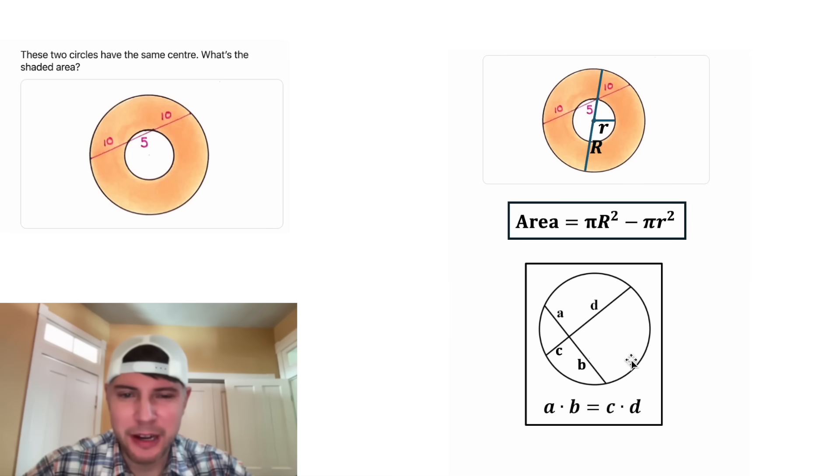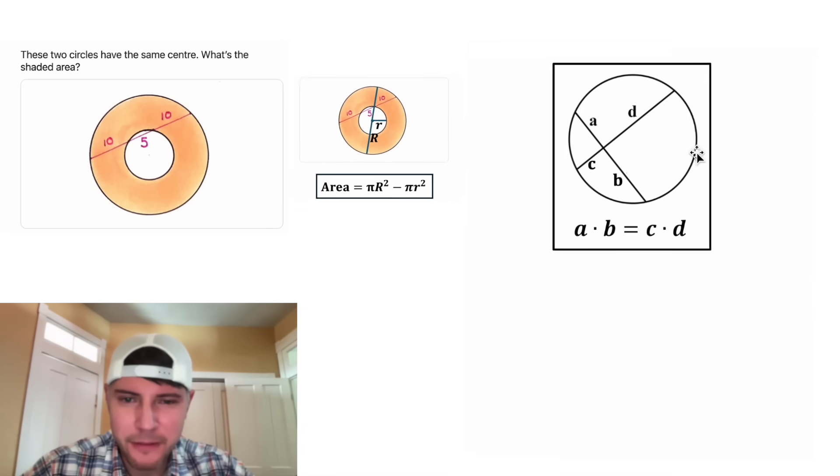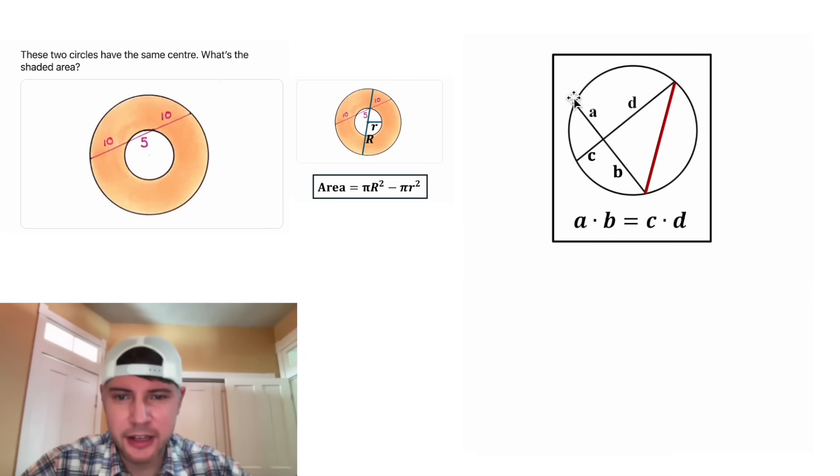Every time I use this people ask about it, so let's see if we can prove it real quick. If we connect here to here and here to here, we're going to end up with two triangles: the orange triangle and the yellow triangle. If we look at these two angles here of the two triangles, those are going to be congruent because they're vertical angles.